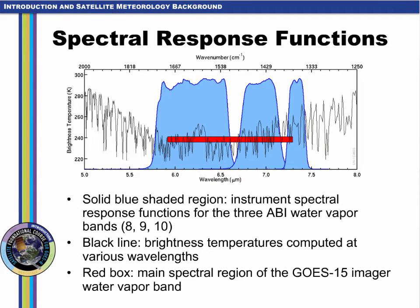This spectral plot illustrates brightness temperatures calculated at various wavelengths in the black line, while the solid blue regions correspond to spectral response functions for the three ABI water vapor bands 8, 9, and 10 from left to right on the plot. The water vapor bands are characterized by relatively strong absorption by water vapor in the atmosphere of energy at these wavelengths that leave the surface. The energy is then re-emitted at a higher altitude and thus colder region of the atmosphere. The red box indicates the main spectral region of the current GOES-15 water vapor band, and the three bands available on the GOES-R ABI will allow a broader spectral region to be observed.